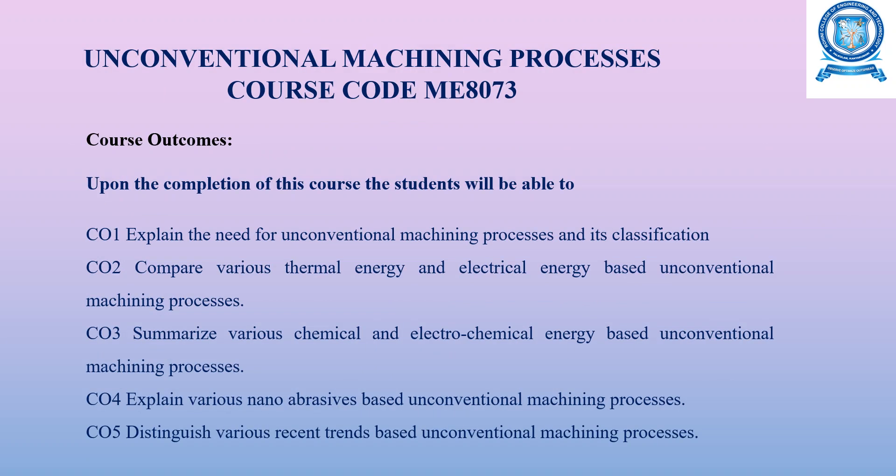The course outcomes for unconventional machining process are: upon completion of unit 1, students will explain the need for unconventional machining processes and its classification; from unit 2, compare various thermal energy and electrical energy based processes; from unit 3, summarize various chemical and electrochemical based processes; from unit 4, explain various nano abrasive based processes; and from unit 5, distinguish various recent trends based unconventional machining processes.